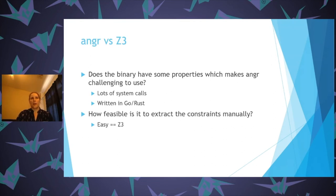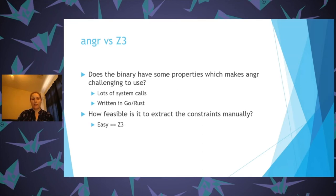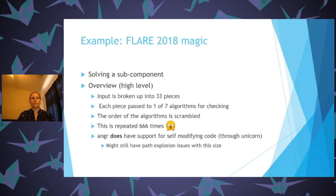What should you ask yourself when deciding between angr and Z3? If the binary has properties that make angr challenging — lots of system calls you can't easily hook, or it's written in a language with heavy runtime calls like Go or Rust — that will be really hard for angr to work through. If it's feasible to extract constraints directly, then Z3 is probably the way to go.